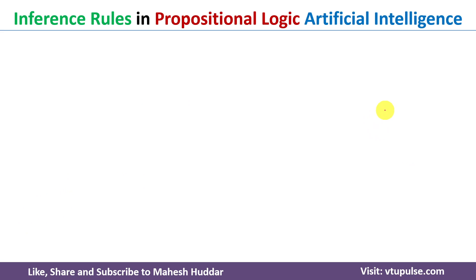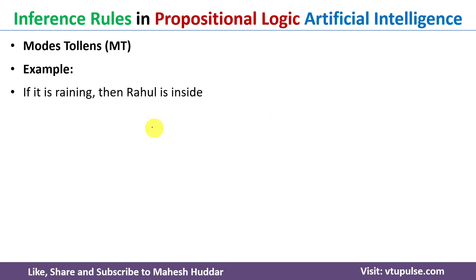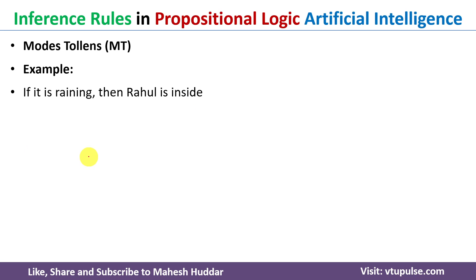The second inference rule is Modus Tollens. Again we take an example. The first predicate is 'If it is raining, then Rahul is inside.' The second statement is 'Rahul is not inside.'